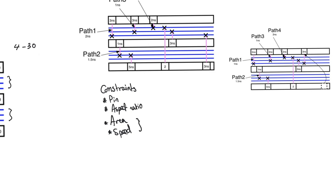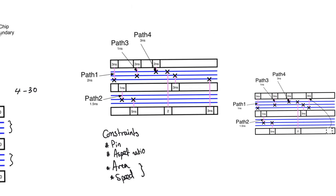Speed specifically means clock frequency and clock period — we are trying to ensure the design can function within a certain clock period. In the given example, the design is area constrained and also speed constrained with a demanded clock period of seven nanoseconds. So every path has to close within seven nanoseconds.